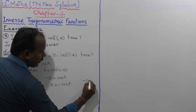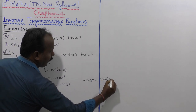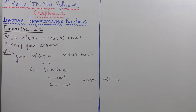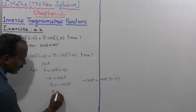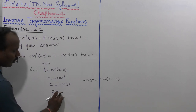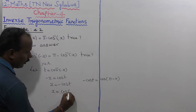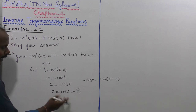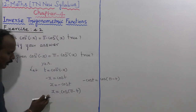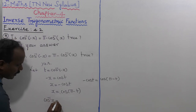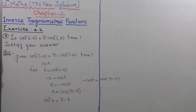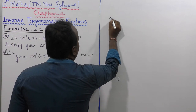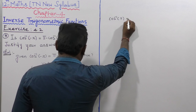From minus x equals cos t, we get x equals minus cos t. Now, minus cos t is replaced by cos of (pi minus t), since we are in the second quadrant where cosine is negative. Therefore, x equals cos(pi minus t), which gives cos inverse of x equals pi minus t.